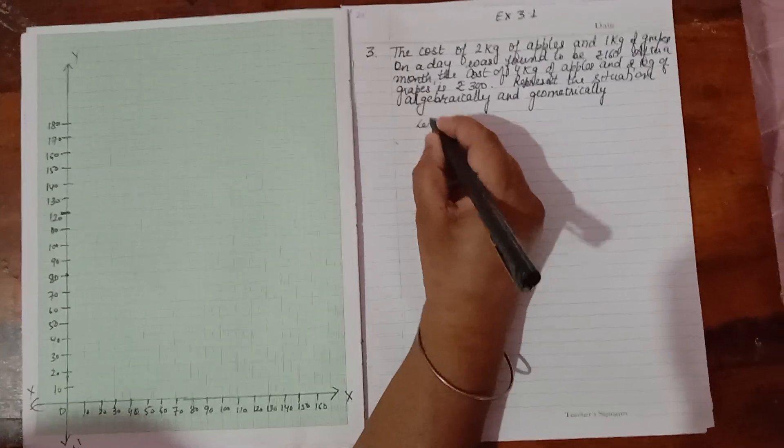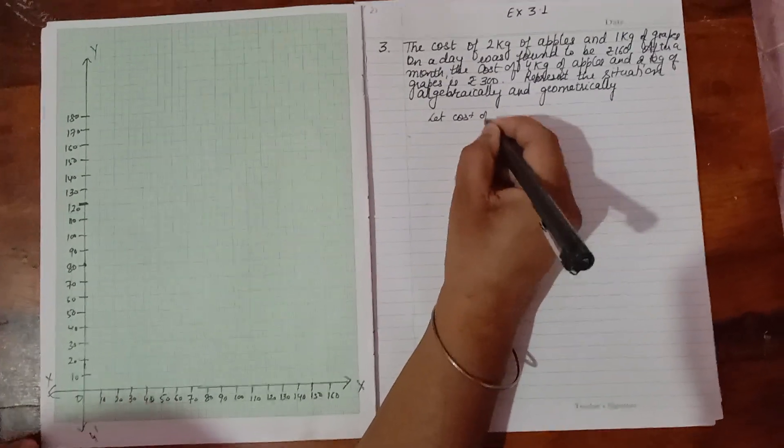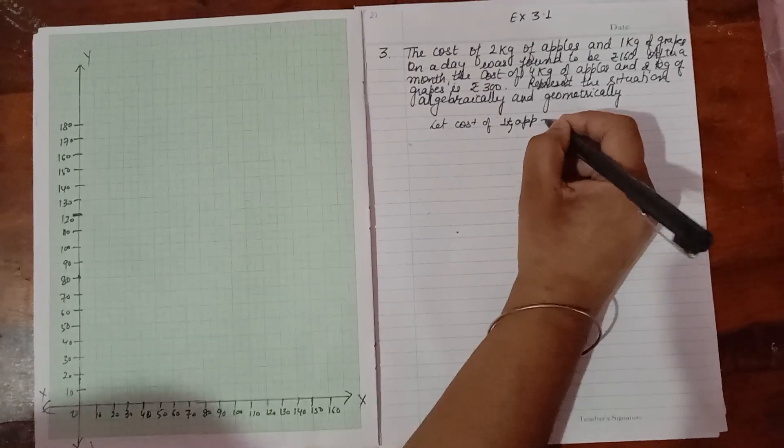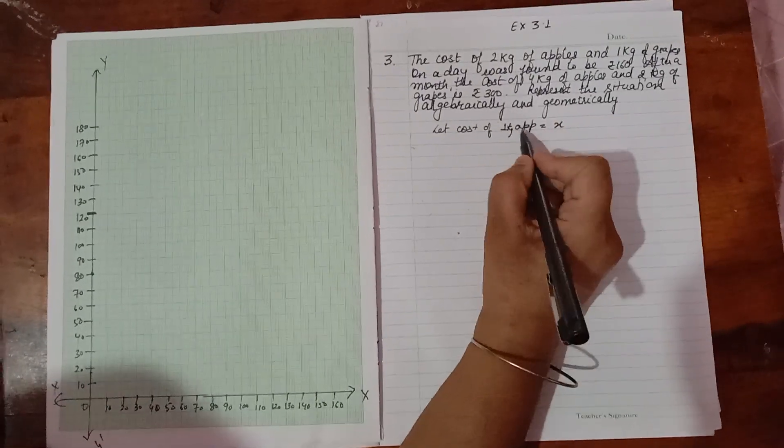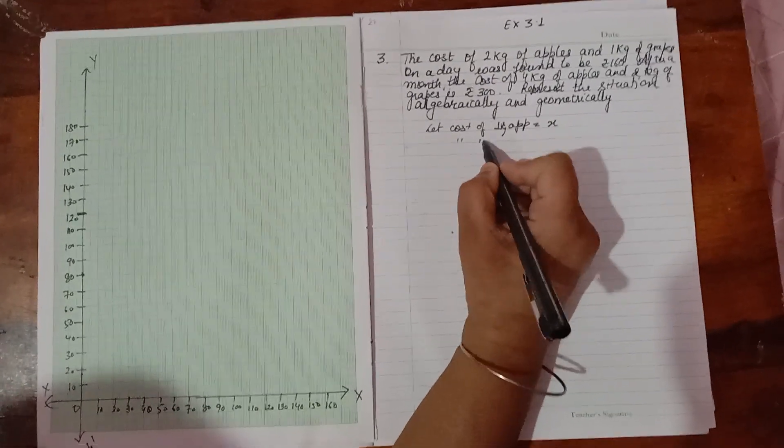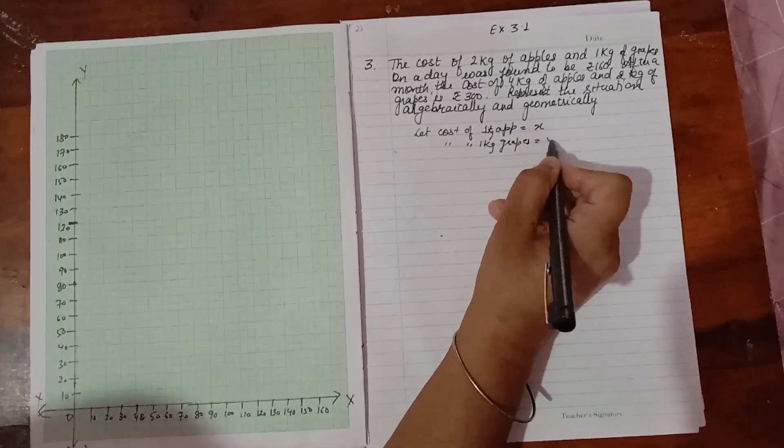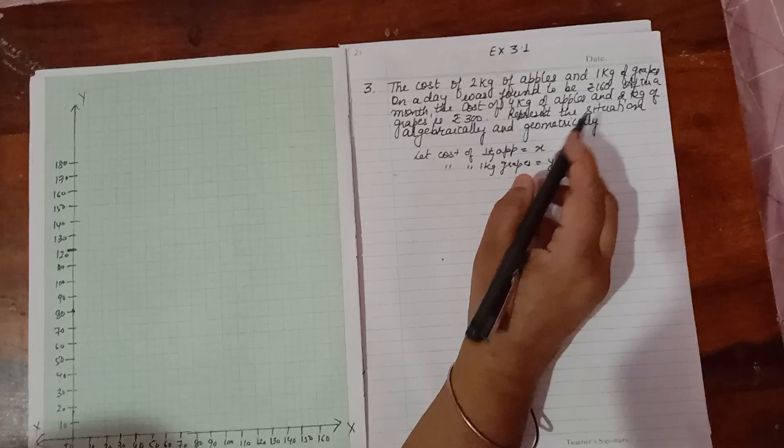Let the cost of 1 kg apple equal X and the cost of 1 kg grapes equal Y.